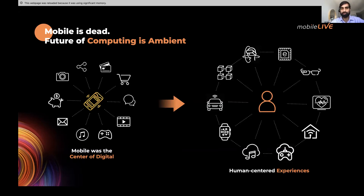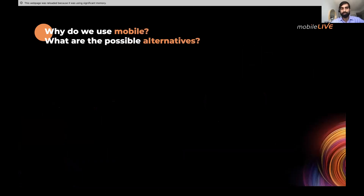What I mean by human-centered experience is: as a human, it is natural for us to communicate verbally — that's a skill most human beings naturally learn. But interacting with a mobile phone is an acquired skill. Kids have to learn it, and there are more than 1.5 billion people in the world who don't even use mobile phones. Talking is natural. The experiences of the future will be more natural, and we would feel how difficult communication was in 2020 when those immersive experiences are so easy and natural to use.